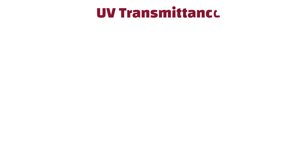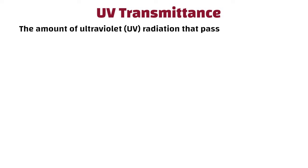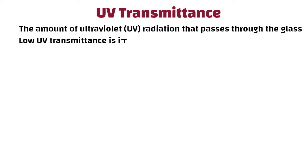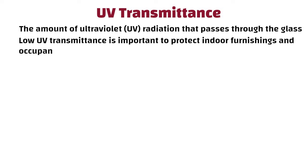UV Transmittance. This parameter indicates the amount of ultraviolet radiation that passes through the glass. Low UV transmittance is important to protect indoor furnishings and occupants from UV damage.